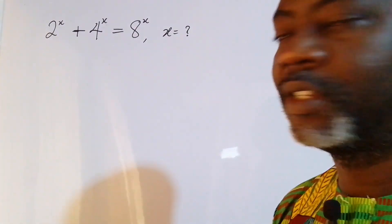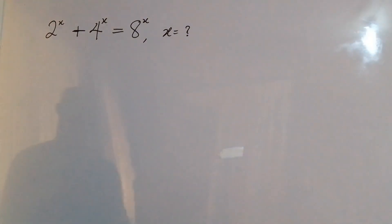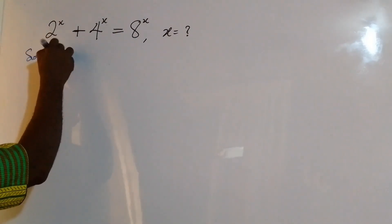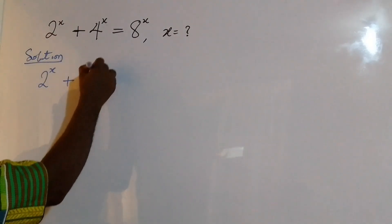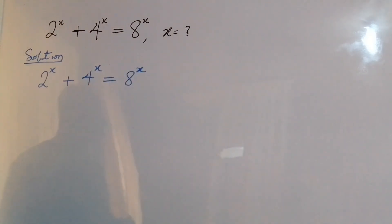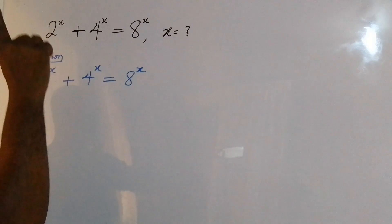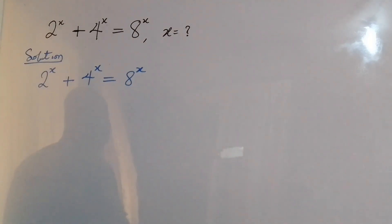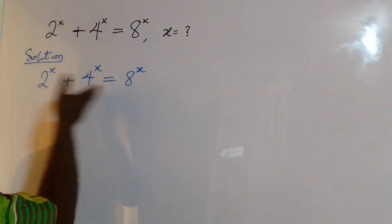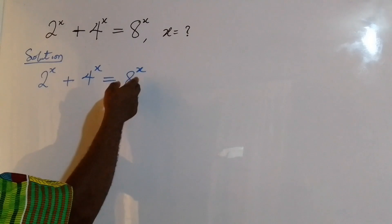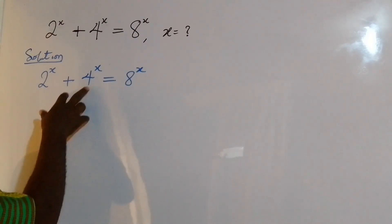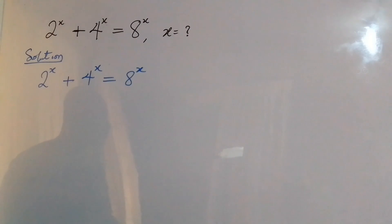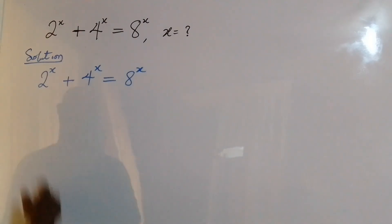So the first thing is to bring down the question. We have 2 to the power of x plus 4 to the power of x equal to 8 to the power of x. In that previous video, what I did was to divide each term by the one on the right-hand side. But looking at this question now — base 2, base 4, base 8 — they all have a common base, and the common base is 2.